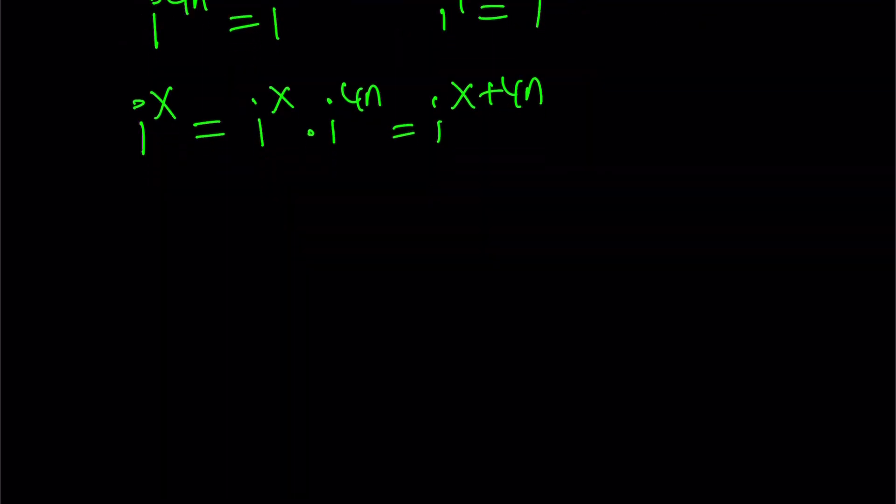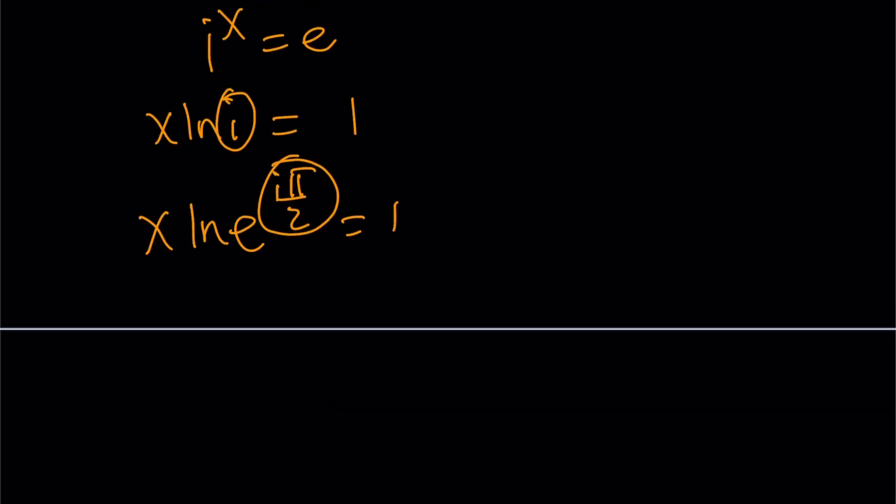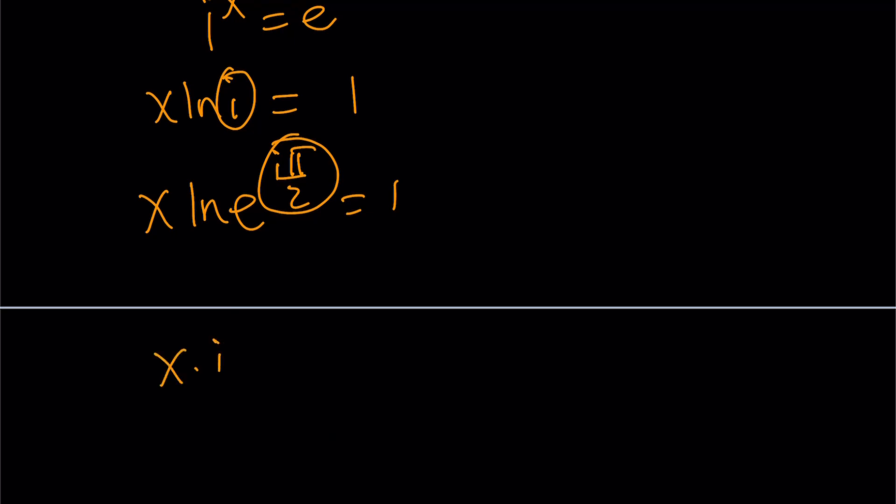You could also look at it from a kind of like a slightly different perspective. Like, okay, I have i to the x equals e. Can I just ln both sides? x ln i is equal to ln e, which is 1. And now replace this i with e to the power i pi over 2. And then from here, you're going to get x times i pi over 2 equals 1 because ln e is 1. And you'll get the exact same solution.